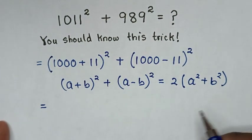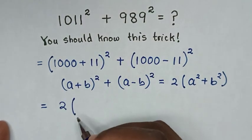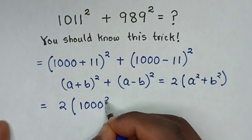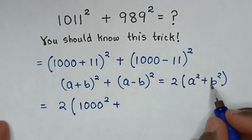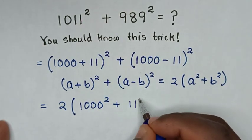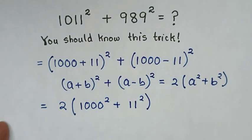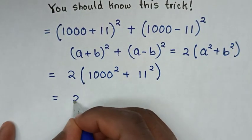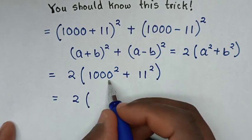So it will be equal to, from this form it will be 2 then bracket a square it will be 1000 square, then plus b square it will be 11 square bracket. Then the next step it will be equal to 2 bracket 1000 square is 1 million.